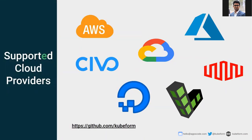Kubeform supports 24 cloud providers, covering almost all top cloud providers. Some of the top providers include AWS, Google Cloud, Azure, DigitalOcean, Linode, Equinix Metal, and 17 more. You can visit the GitHub organization at github.com/kubeform to see all the cloud providers that Kubeform currently supports.